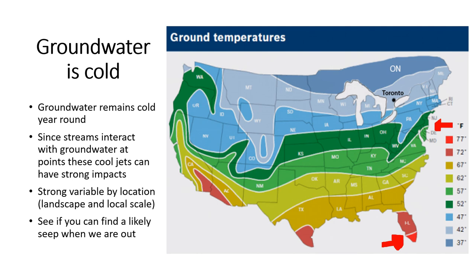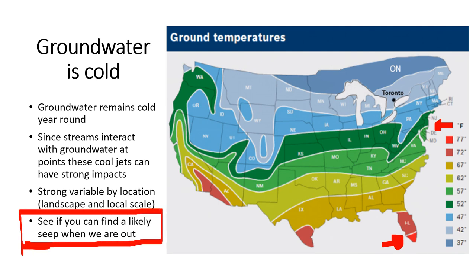If we were out sampling, you'd be able to find a groundwater seep just by detecting where the temperature changes abruptly.